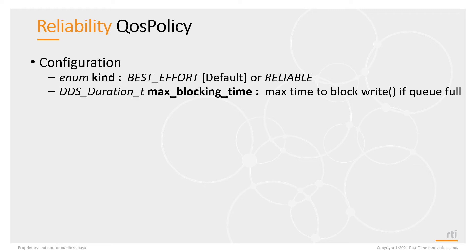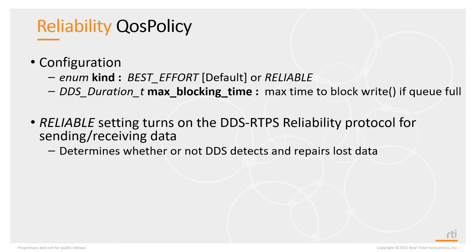Setting reliability kind to reliable tells DDS to use the DDS-RTPS reliability protocol for sending and receiving data. This protocol sends heartbeats, ACKs, and NACKs to detect whether data is lost, and if data is determined to be lost, it will repair it.